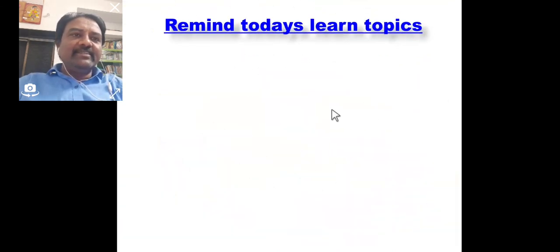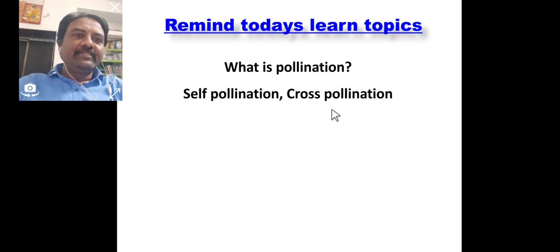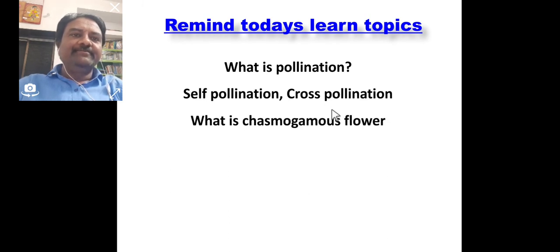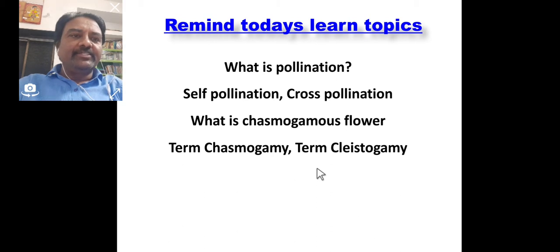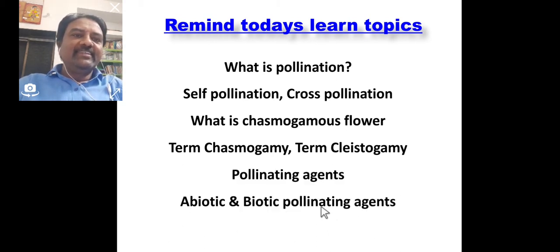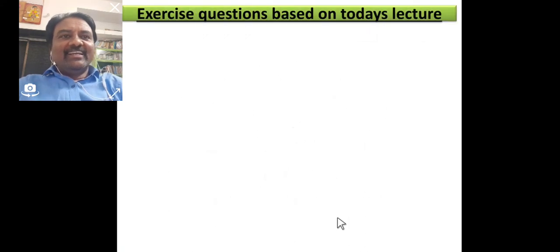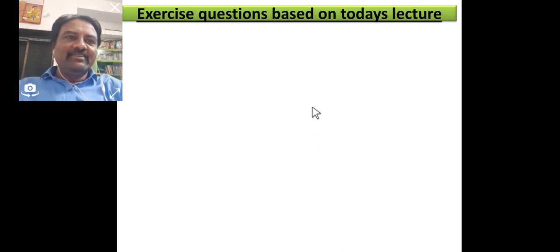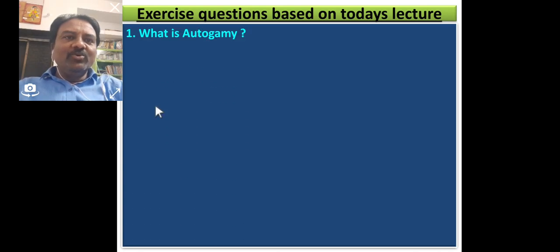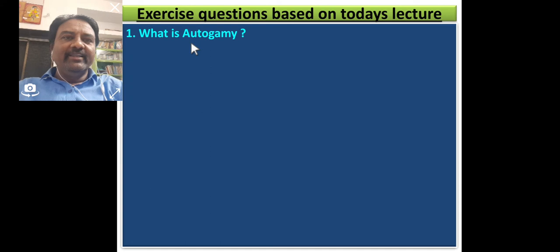Reminder of today's topics: what is pollination, self-pollination, cross pollination, chasmogamous flower, chasmogamy, cleistogamy, pollinating agents, abiotic and biotic pollinating agents. Exercise questions: What is autogamy? Autogamy is a type of self-pollination in which pollen grain transfers from anther to stigma in the same flower. What is homogamy? In homogamy, male and female reproductive parts — anther and stigma — mature at the same time.